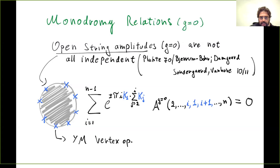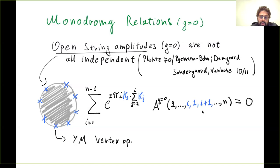At tree level, the monodromy relations are linear relations between string amplitudes. The string worldsheet is an open string — it has a boundary — and you put particles on the boundary with some ordering. The monodromy relations tell you that not all orderings are independent; there are relations between them, with coefficients that are exponentials of the Mandelstam invariants. If you take particle one and start hopping it between the other particles, it accumulates the phase of the particles it hops through, and at the end that sum equals zero.